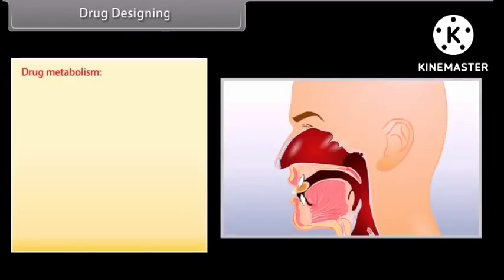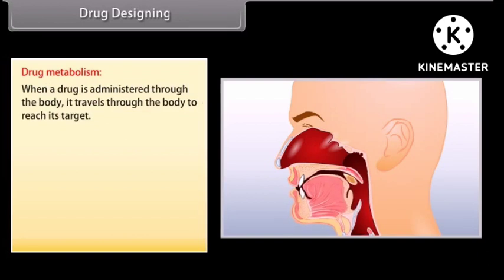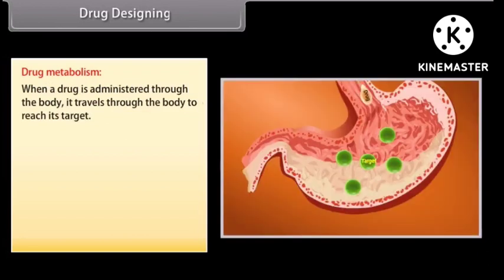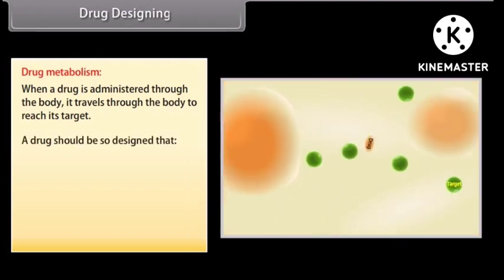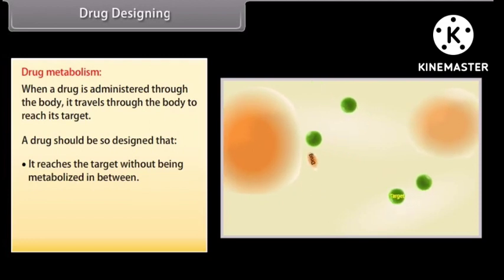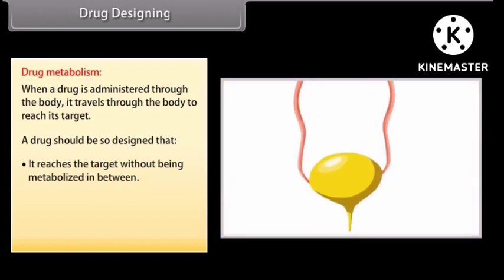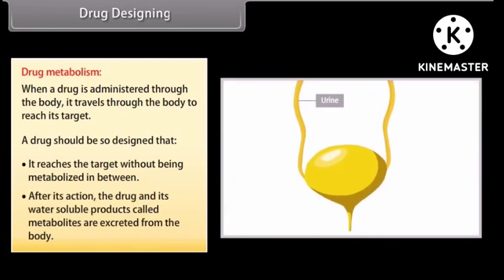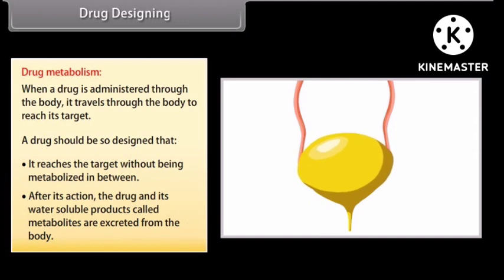Drug metabolism: when a drug is administered, it travels through the body to reach its target. A drug should be designed so that it reaches the target without being metabolized in between. Also, the drug should be designed so that after its action, the drug and its water-soluble products called metabolites are excreted through urine, faeces, exhaled air, saliva, and sweat without causing harm to the body.